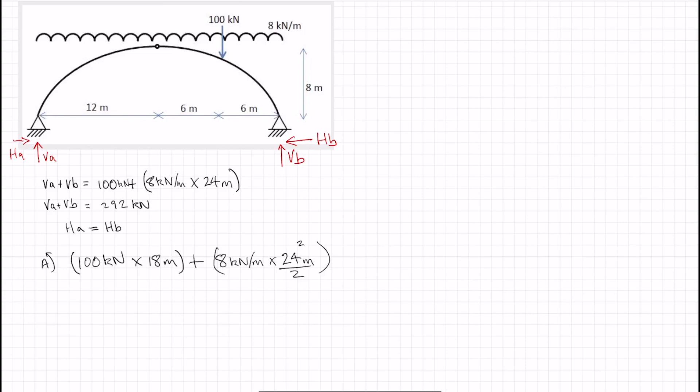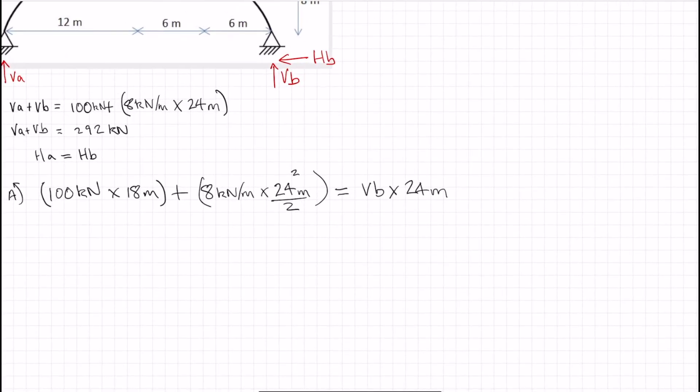And those are the clockwise moments. And the only anti-clockwise moment to resist that is the VB times by that lever arm, which is 24 meters. So let's add these all up then. So 100 times 18 is 1,800. And 24 squared divided by 2 and times that by 8, that's plus 2304 is equal to 24 VB.